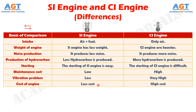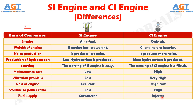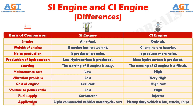In terms of engine cost, SI engine bears less cost whereas CI engine bears high cost. In terms of volume-to-power ratio, SI engine has a lower volume-to-power ratio whereas CI engine has a higher volume-to-power ratio. In terms of fuel supply, in SI engine the fuel supply is via carburetor whereas in CI engine the fuel supply is via injector. In terms of application, SI engine is used in light commercial vehicles like motorcycles and cars, whereas CI engine is used in heavy-duty vehicles like buses, trucks, and ships.